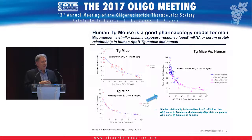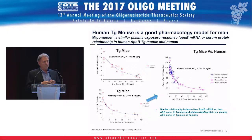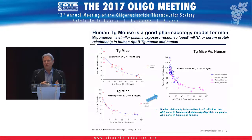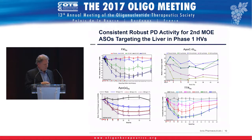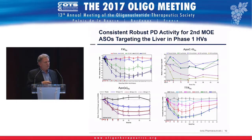The transgenic mouse has become our working model as we work toward optimal human candidates. Although clearance differs between mouse and man, the concentrations achieved in the target tissue are nearly one-to-one — quite remarkable, now shown across multiple compounds. We can measure target protein in plasma over time, and doses that achieve these reductions for unconjugated oligonucleotides are generally between 50 and 300 milligrams per week.